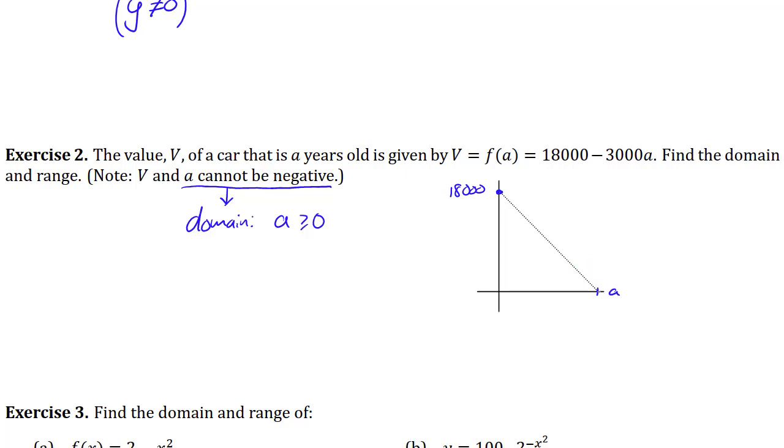And where is that going to happen? Well if you want to find that a intercept we're going to solve this for a. Plug in f of a equals 0 at this point and see what a is. And the reason we need this is because after that point the value becomes negative and if the value is negative then that doesn't make sense either. So if we solve this equation you add the 3,000 to both sides divide everything by 3,000 you'll get a is equal to 6.